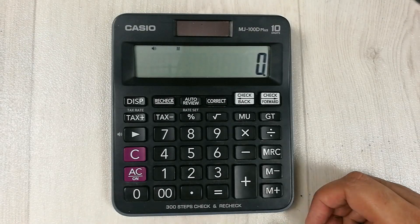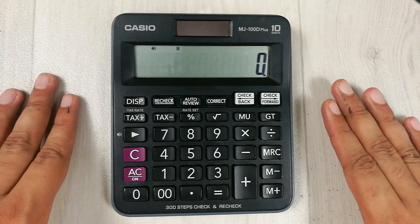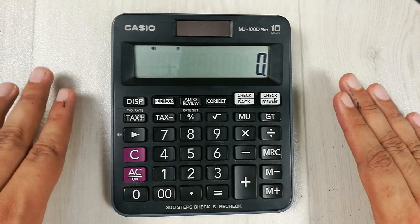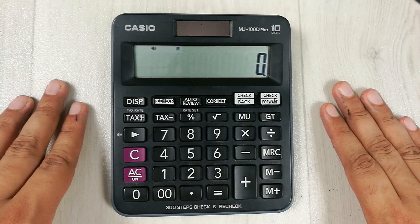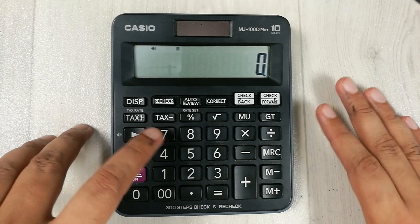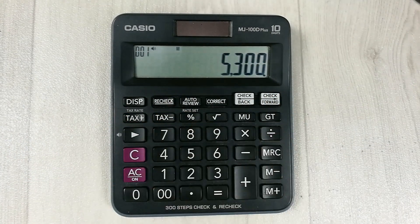Hello guys, I hope you are doing really well. In today's video I am going to show you how to calculate 30% of a price in calculator. For example, the price of an item is 5300.